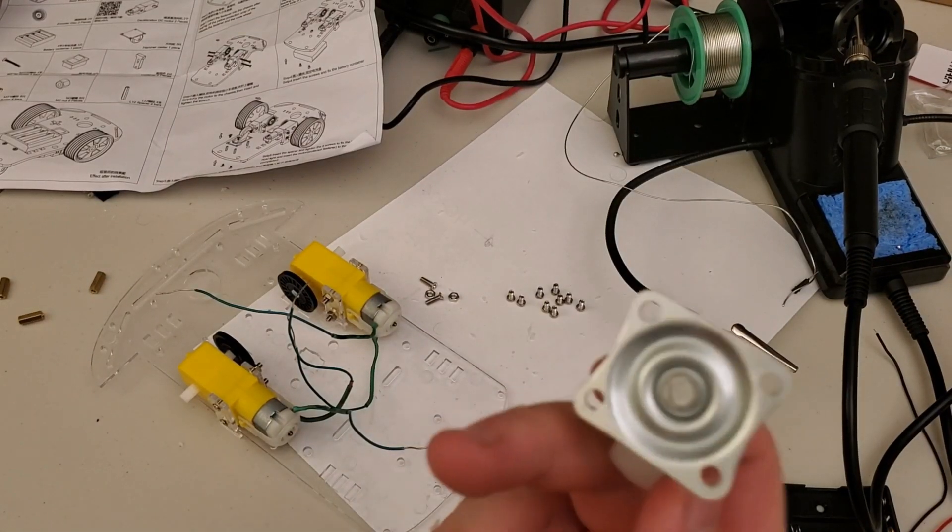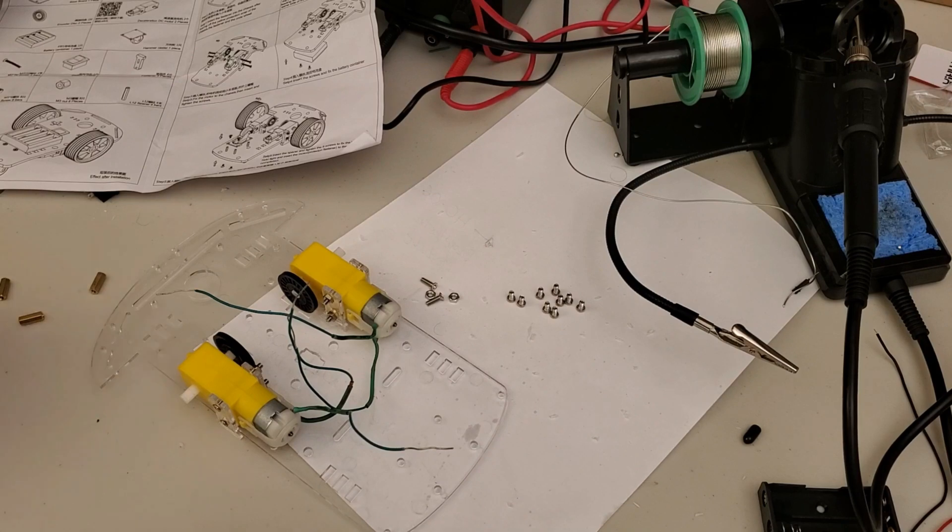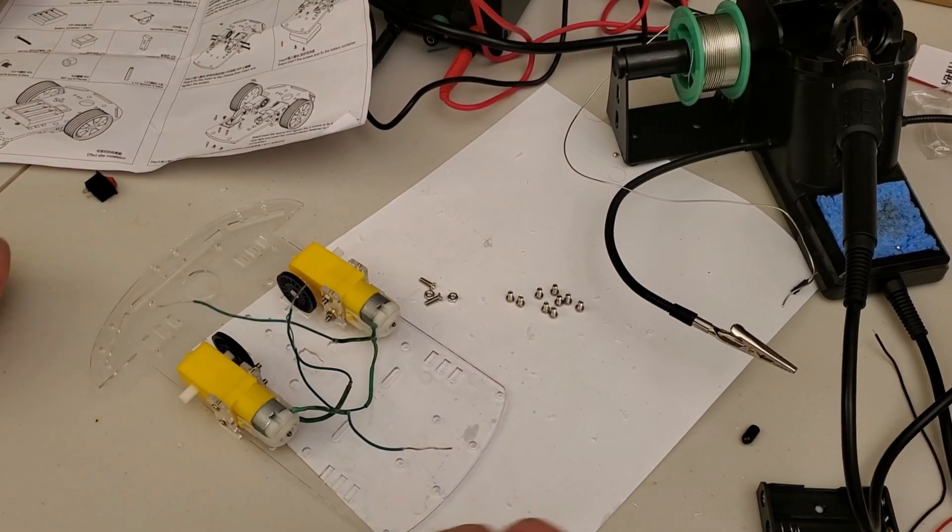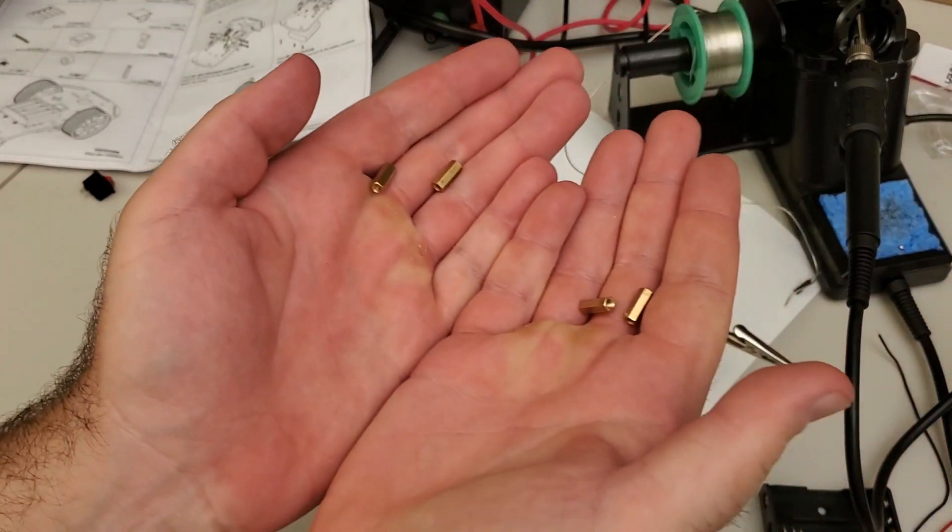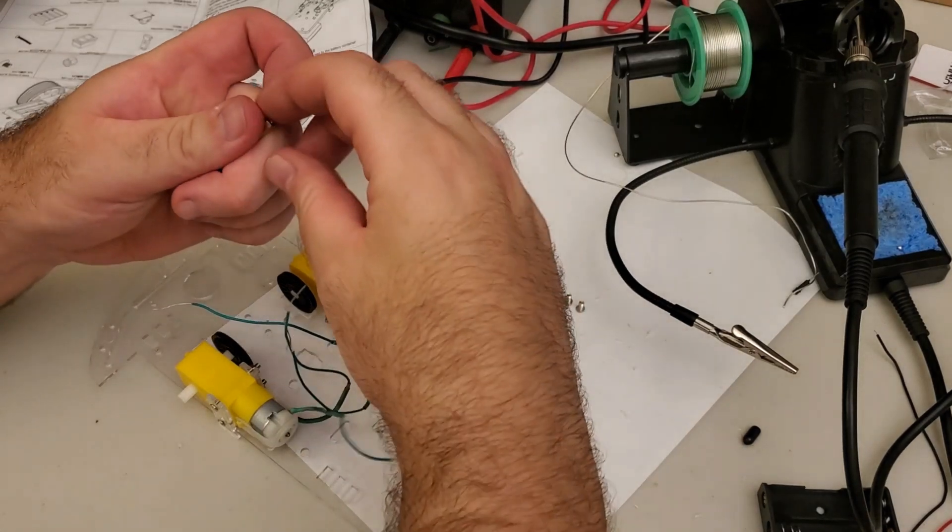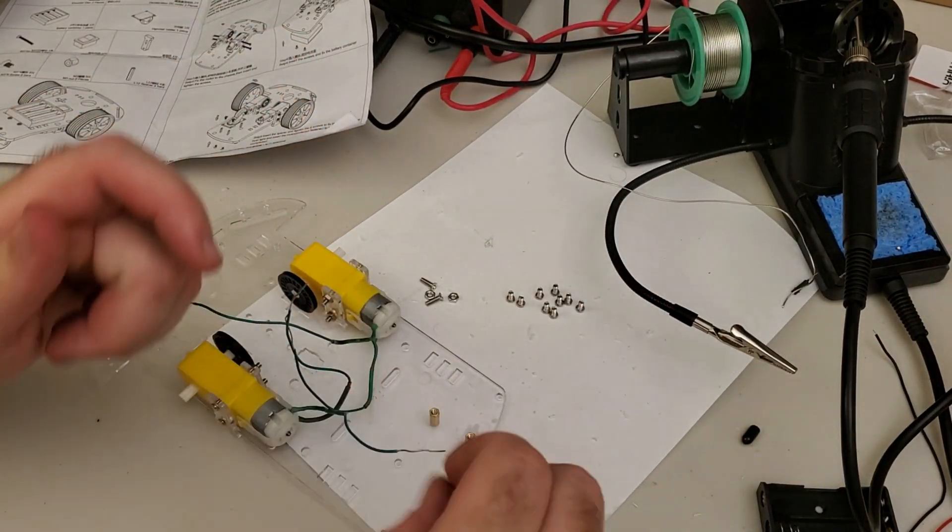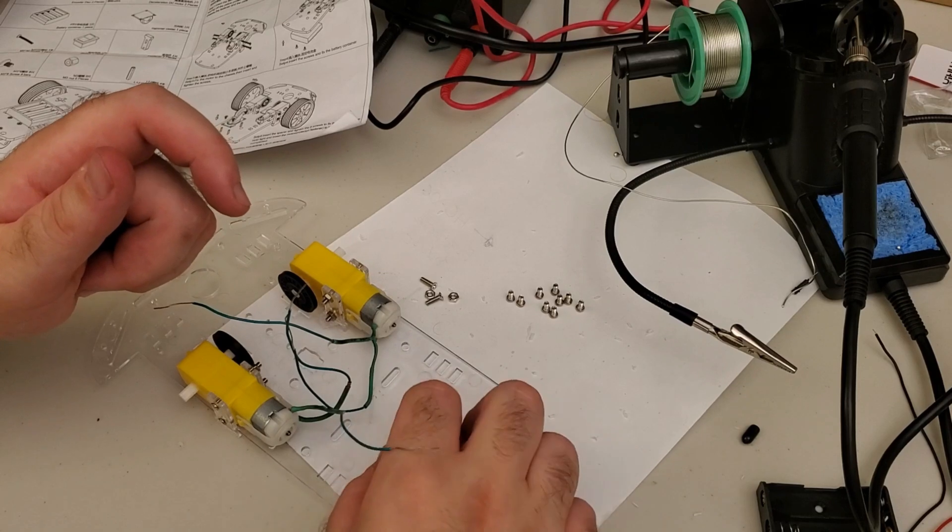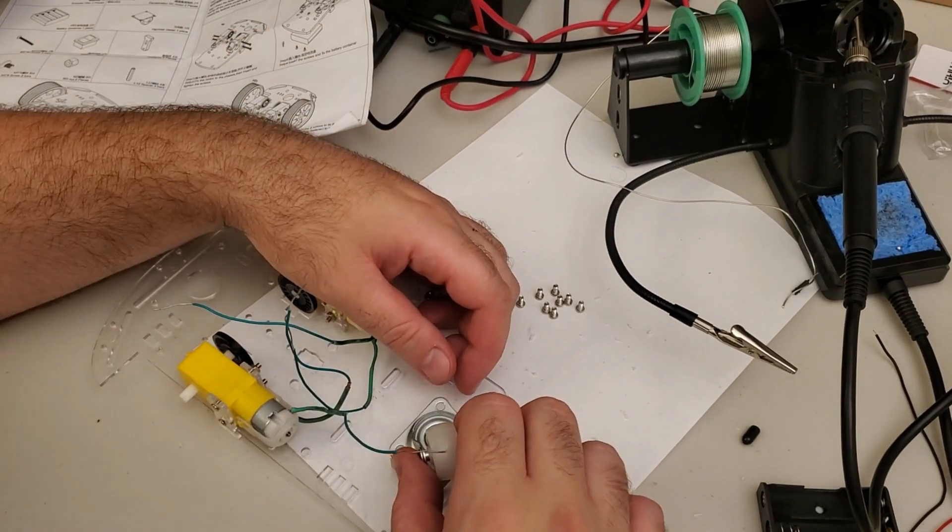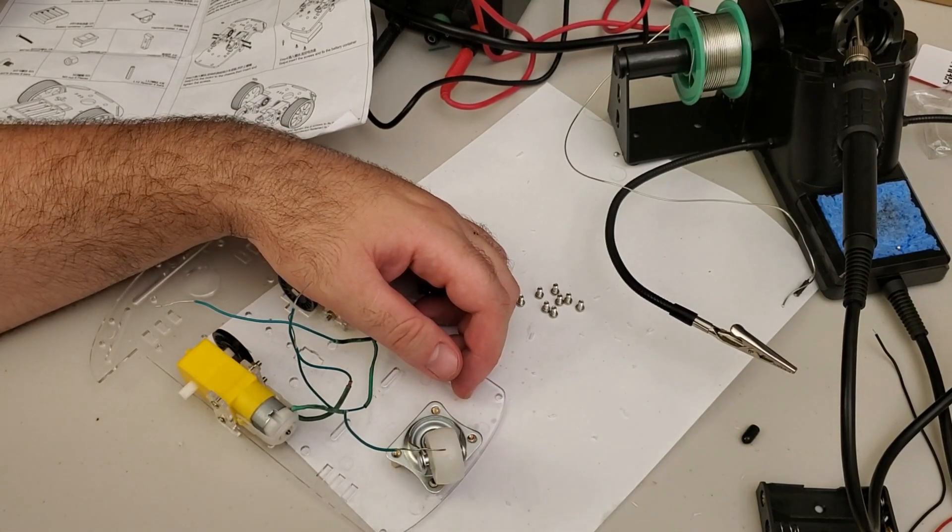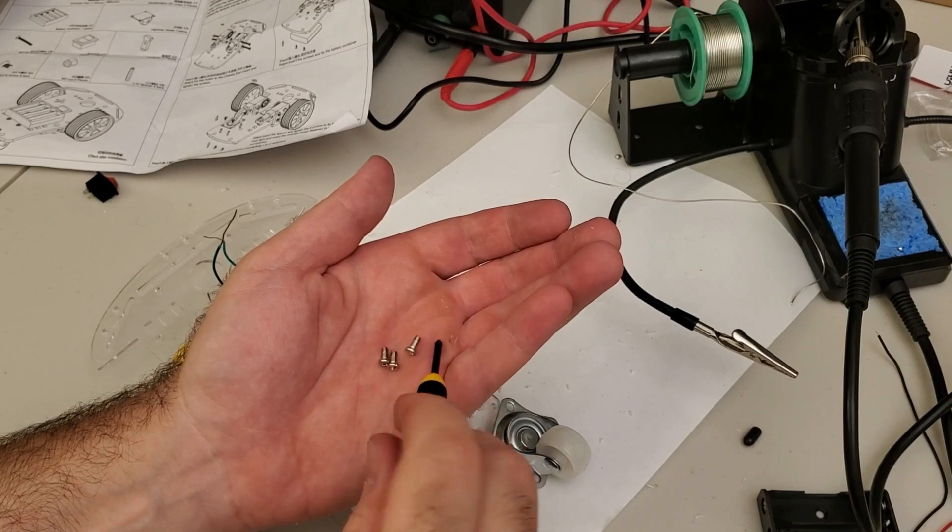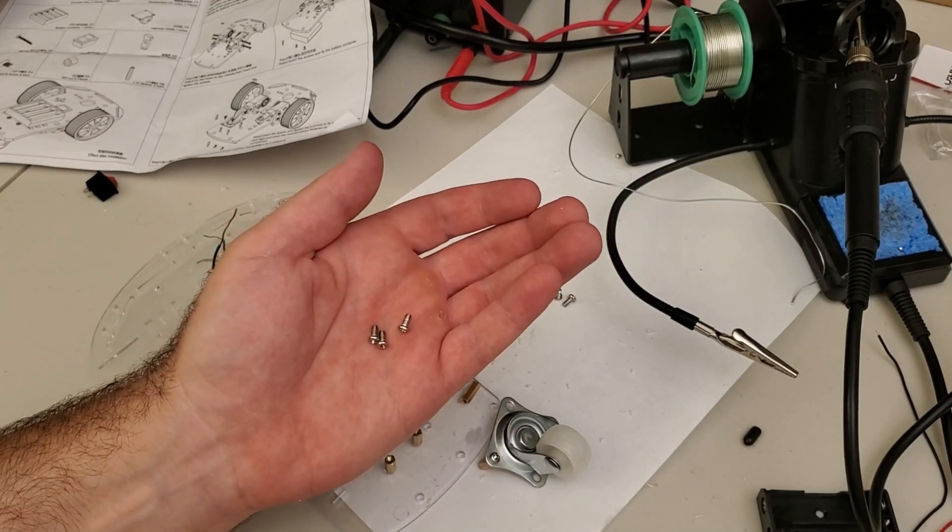The next step is to fix this caster over here. Let's do that. To fix the caster we will be using these four spacers. Let's do that. Here are the spacers. And here's our caster. To add the caster we will be using these smaller screws. Okay, so let's add the caster.